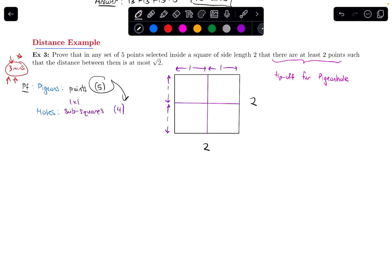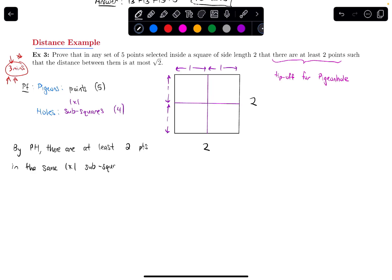Because I have more points than holes, by the pigeonhole principle there are at least 2 points in the same 1 by 1 sub-square. That's great for us, because if I think about any 2 points within a sub-square, the furthest apart they could be is if they were at opposite corners. If they're at opposite corners, I notice I've got a right triangle, and by the Pythagorean theorem the length of that hypotenuse is square root of 2.